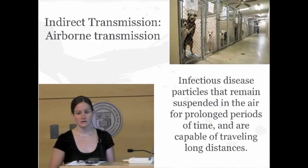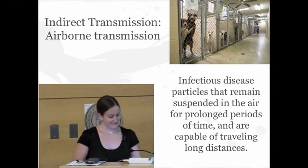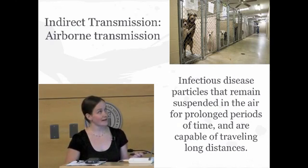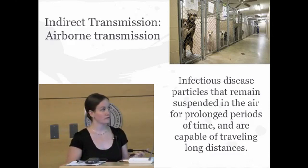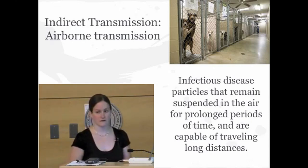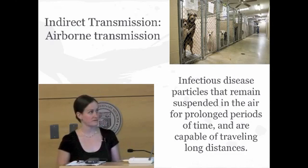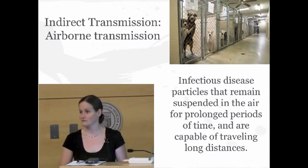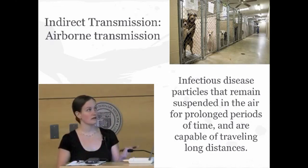Indirect transmission can be broken down into airborne transmission, fomite or environmental transmission, and vector transmission. Airborne transmission happens when an infectious particle remains suspended in the environment. A great example is dogs barking and coughing when they have kennel cough — infectious particles remain suspended in the air for a prolonged period of time and are capable of traveling pretty far distances and infecting surrounding animals.